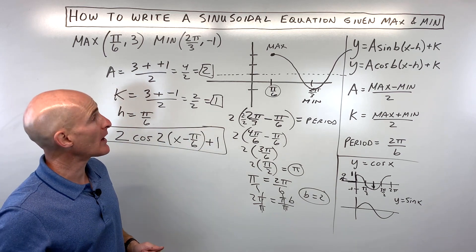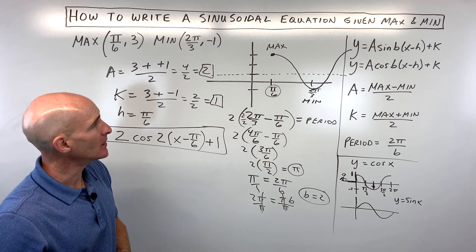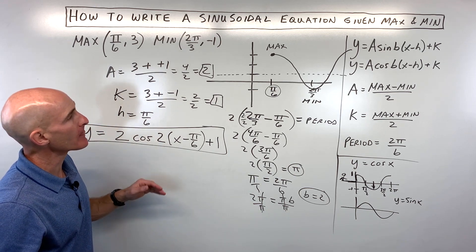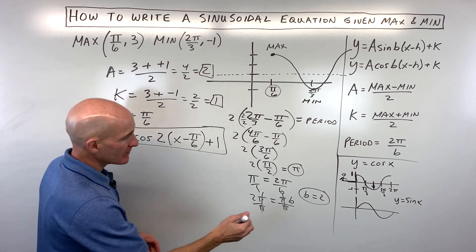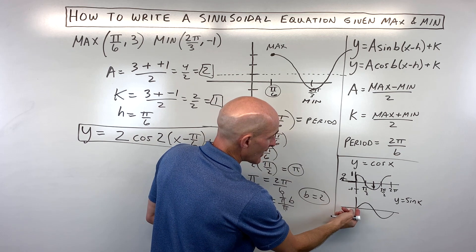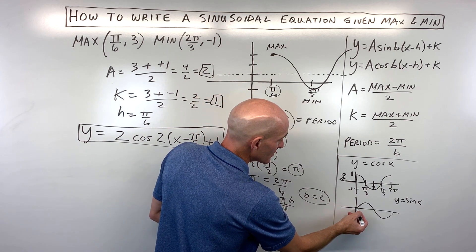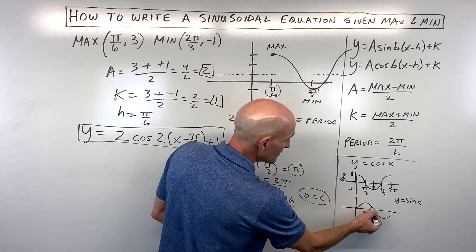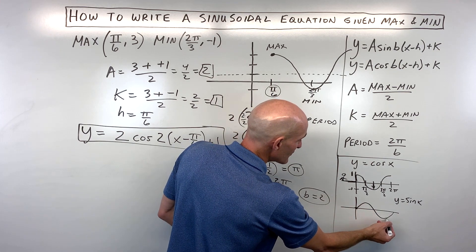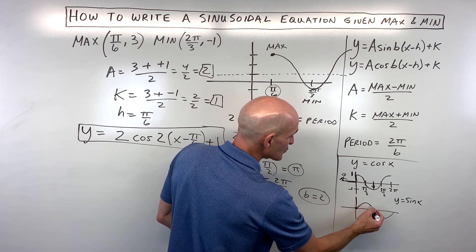Now you might say, what happens if I want to write this as a sine graph and not a cosine graph? Now, remember, sine looks like this, if it hasn't been stretched or shifted. It starts here at the midline, at the origin. It goes up to the maximum, back to the midline, down to the minimum, back to the midline. So that's your basic sine graph.